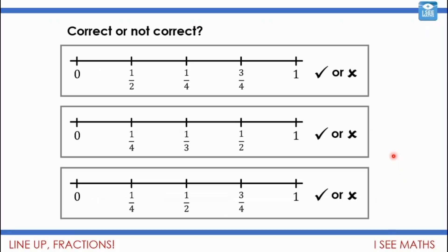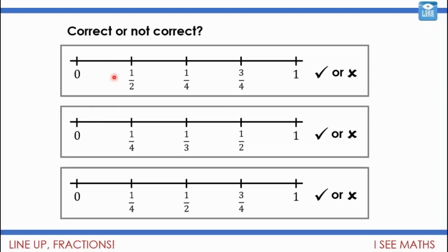Okay, I've got a question for you — correct or not correct for these three examples? Pause the video and see what you think. Well, the first example is not correct. You might think the two is the smallest number so it goes first, then the four, then three quarters — but that's not true, because actually a half should be halfway, and a quarter is less than a half. So they're in the wrong position — we should swap around the half and the quarter.